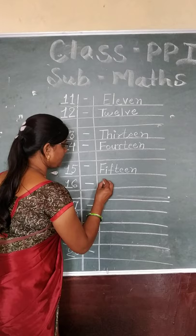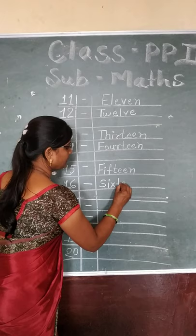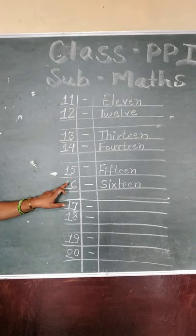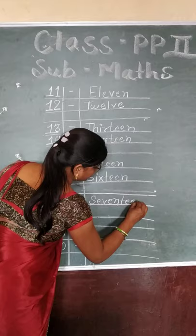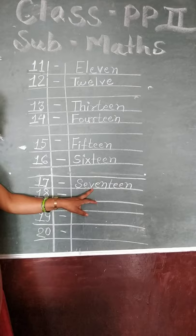16 — S, I, X, T, W, E, N — 16. Then 15, 16. Then 17 — S, E, V, E, N, T, W, E, N — 17. Ok? S, E, V, E, N, T, W, E, N — 17.